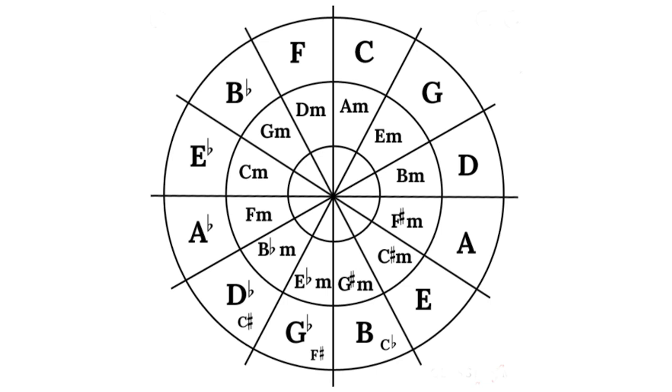the common chords for C major are C, D minor, E minor, F, G and A minor and you can see all those chords in the top quarter of this circle. The common chords in A minor are A minor, C, D minor, E minor, F and G and again they're all in that top quarter.